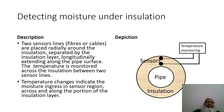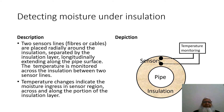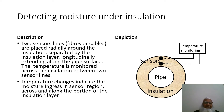The next technique is an indirect method for monitoring corrosion under insulation — it monitors moisture present under the insulation that may lead to corrosion. Two sensor lines, fibers, or cables are placed radially around the insulation, separated by an insulation layer and extending longitudinally along the pipe surface, as shown in the picture. Temperature is monitored across the insulation between the two sensor lines; temperature changes indicate moisture ingress in the sensor region across and along the insulation layer.